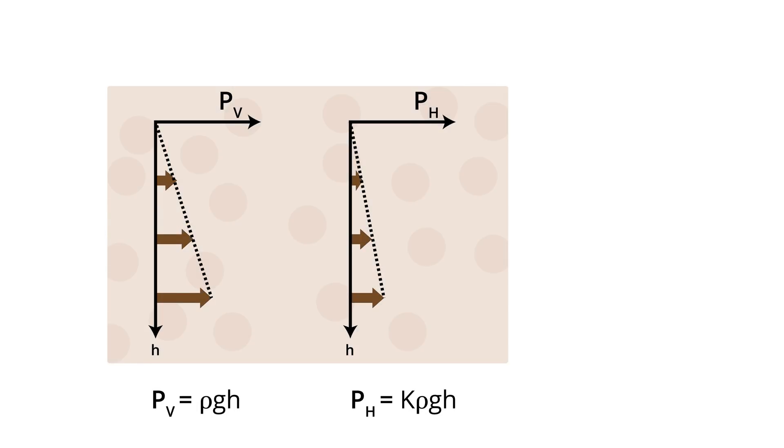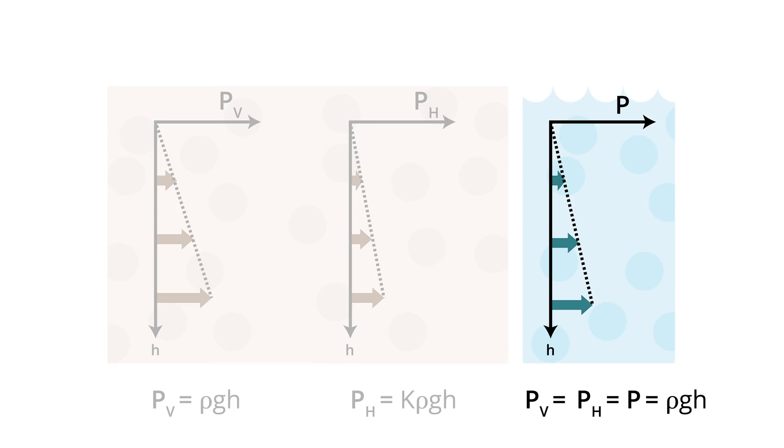So, in summary, for granular materials, the horizontal pressure, pH, is usually less than the vertical pressure, PV, as shown by these graphs and formulas. For water and other liquids, however, the horizontal and vertical pressures are equal to a single value, p, as shown in this graph and formula.